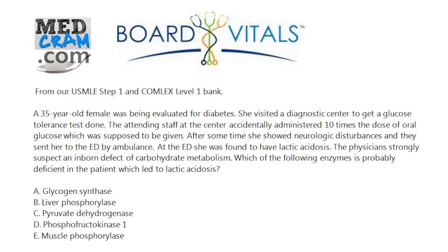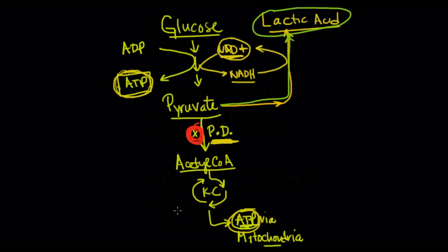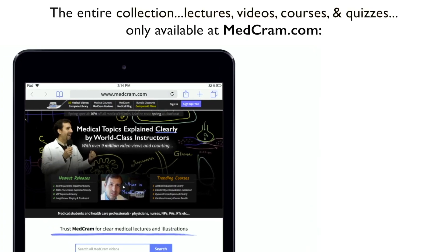So again, knowledge of the pathway, specifically that pyruvate has two fates. One is lactic acid that regenerates the NAD+, and the other is acetyl-CoA, which is the main way that it's metabolized in the Krebs cycle, which forms ATP via the electron transport chain. Thanks for joining us!